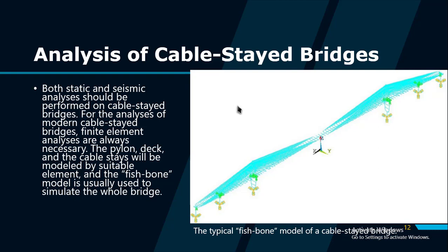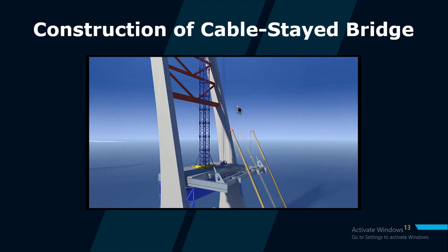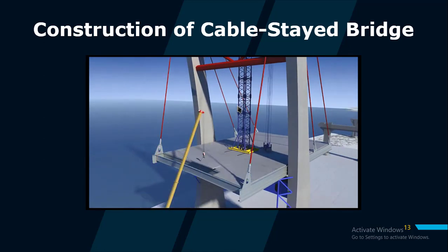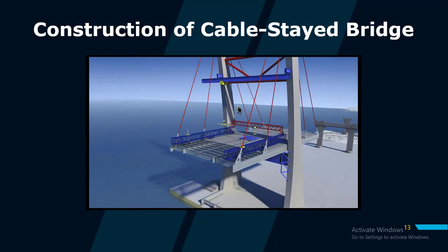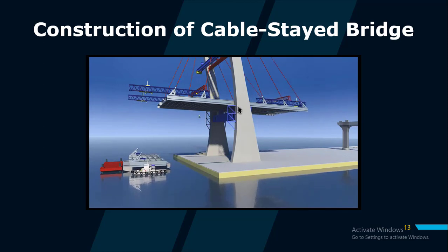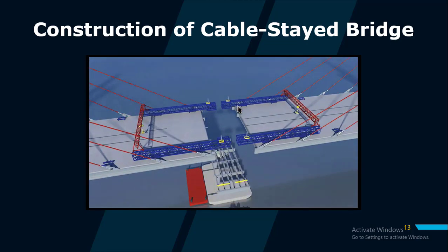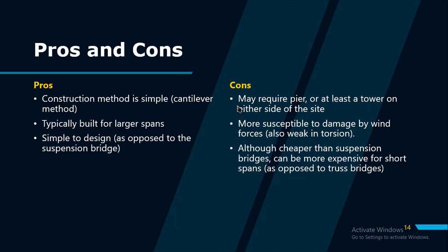Construction of cable-stayed bridges, as shown in the video, uses a method called free cantilever. In the first stage, pylons and deck units above the main piers are erected and fixed to the piers. In the second stage, new deck segments are erected by free cantilevering from the pylon, either symmetrically in both directions or into the main span; stay cables are installed and tensioned initially to relieve bending moment in the deck. This stage is repeated until the deck at mid-span is connected. The largest cantilever condition before the final mid-span connection must be carefully confirmed for construction safety.